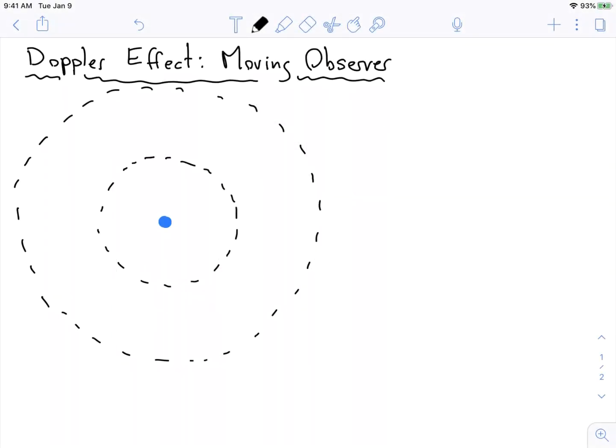So here we have this stationary source that is emitting some frequency f, and the waves are moving away from this at some wave speed, the velocity of the wave. And imagine I have some observer over here moving at some velocity v_o.